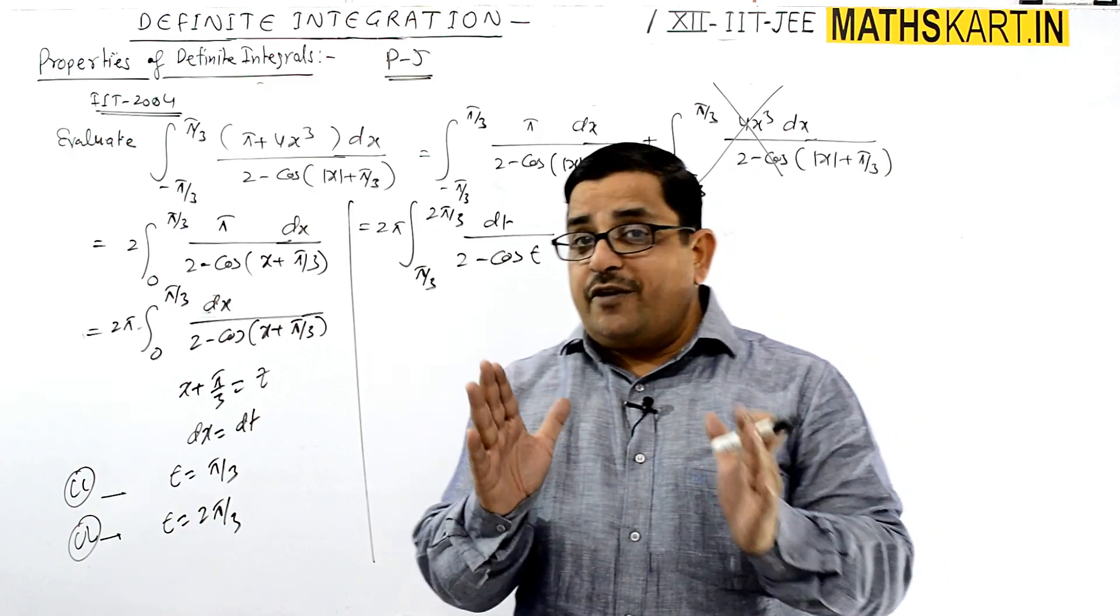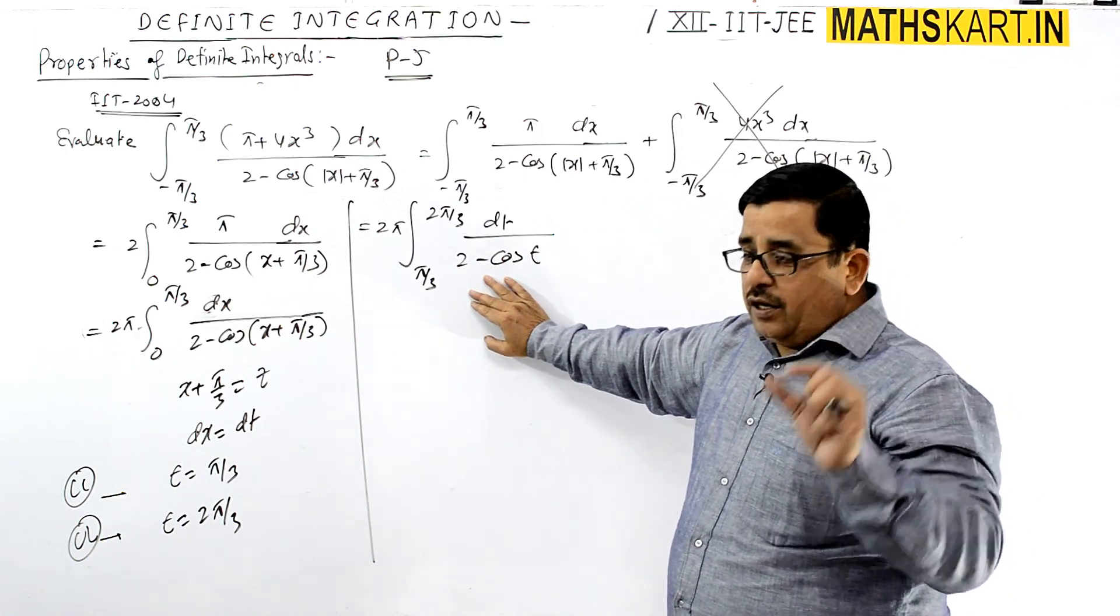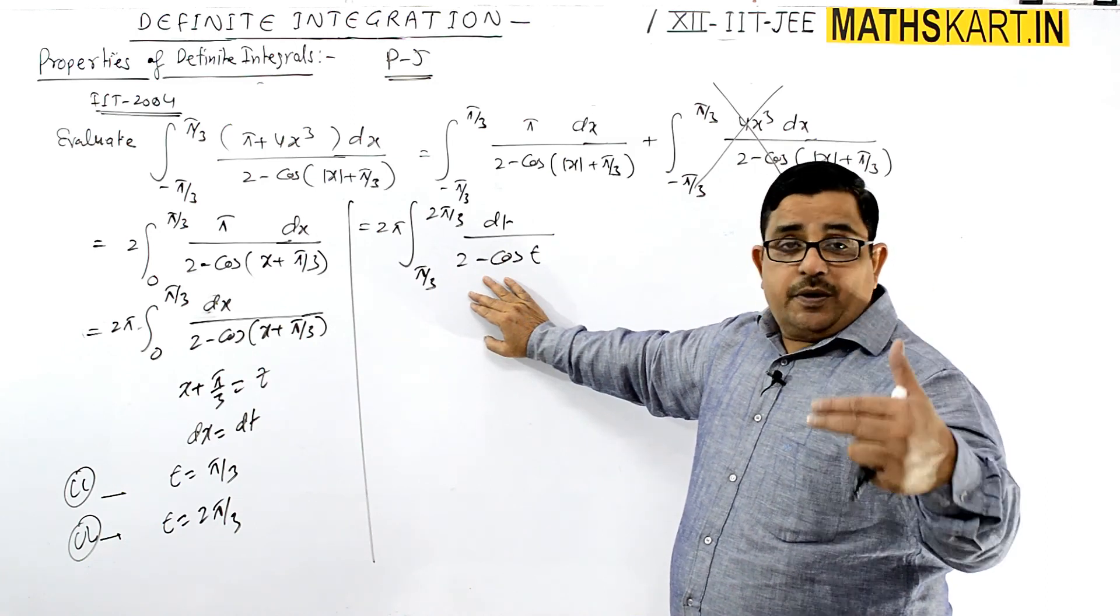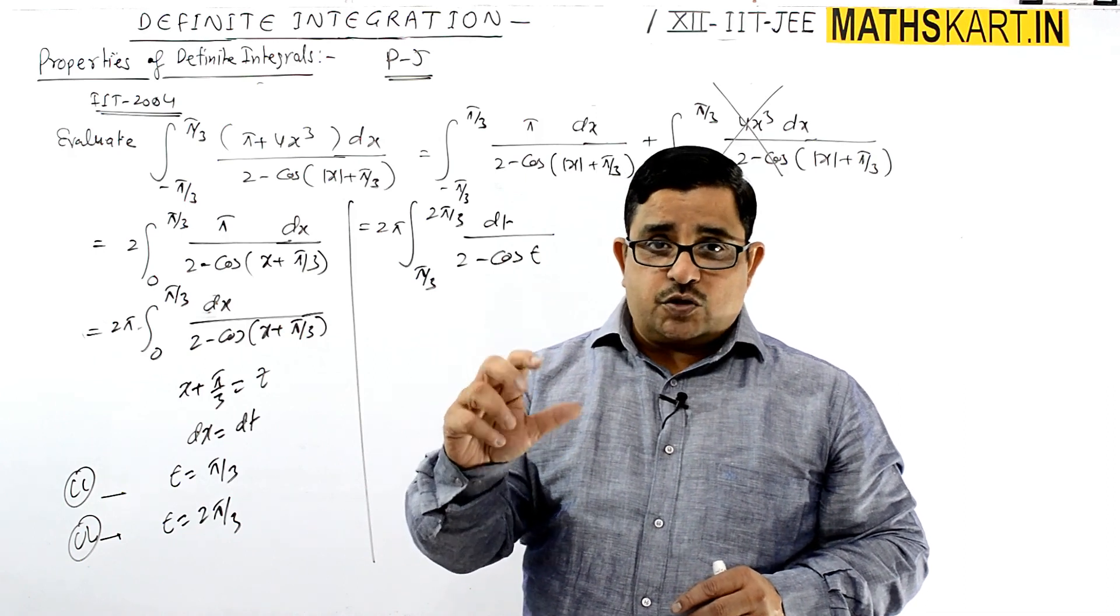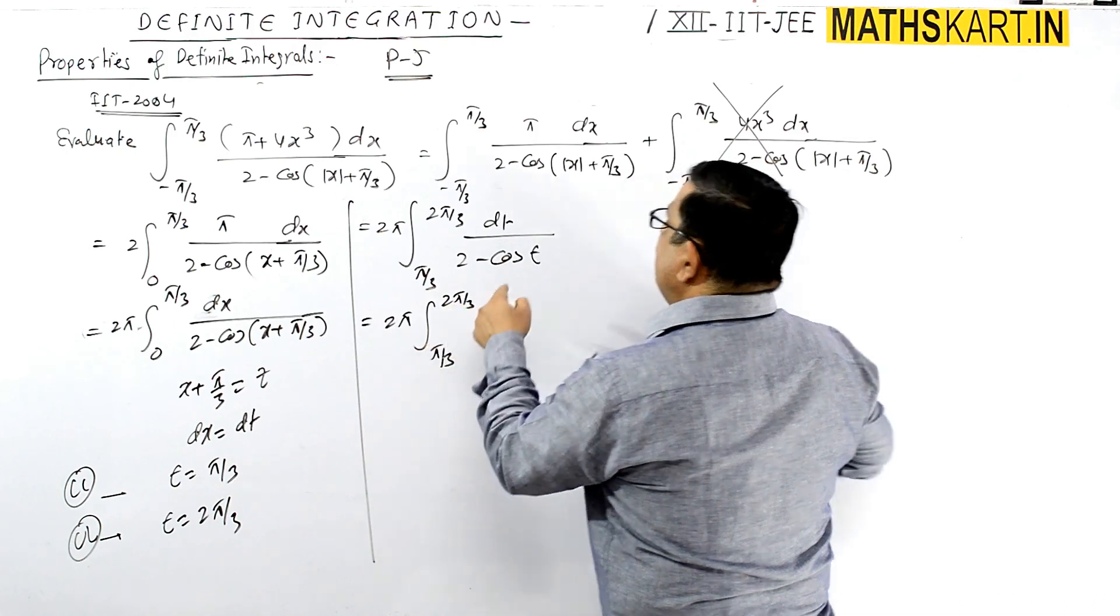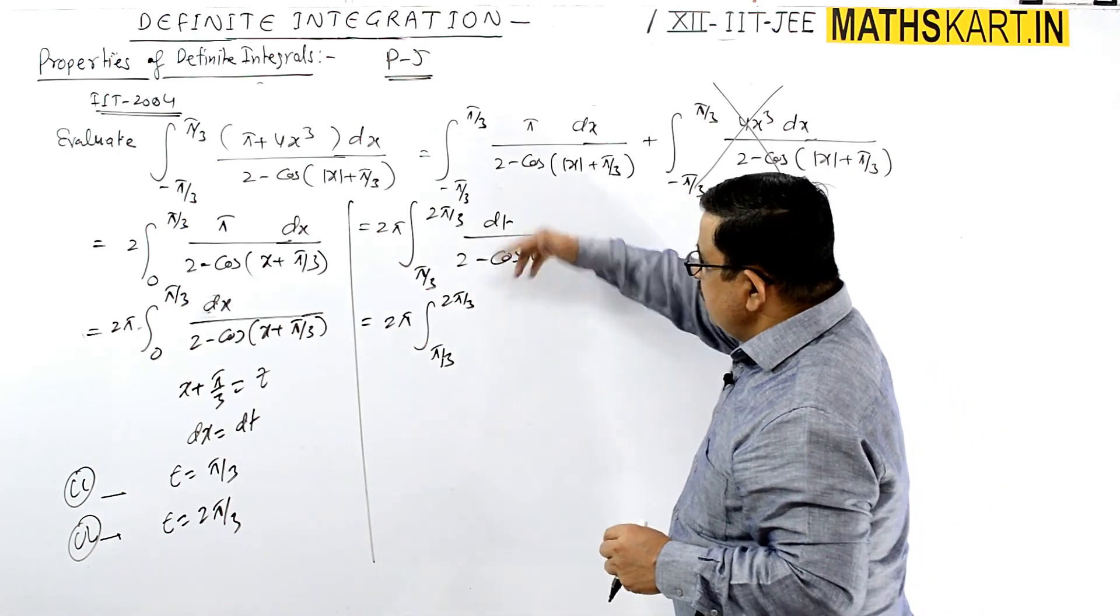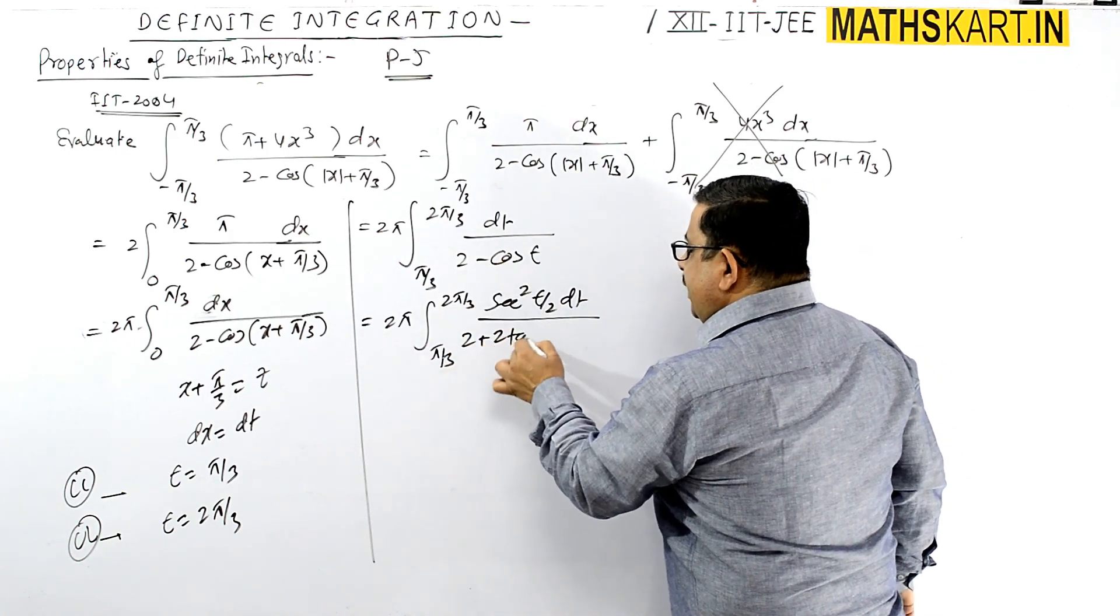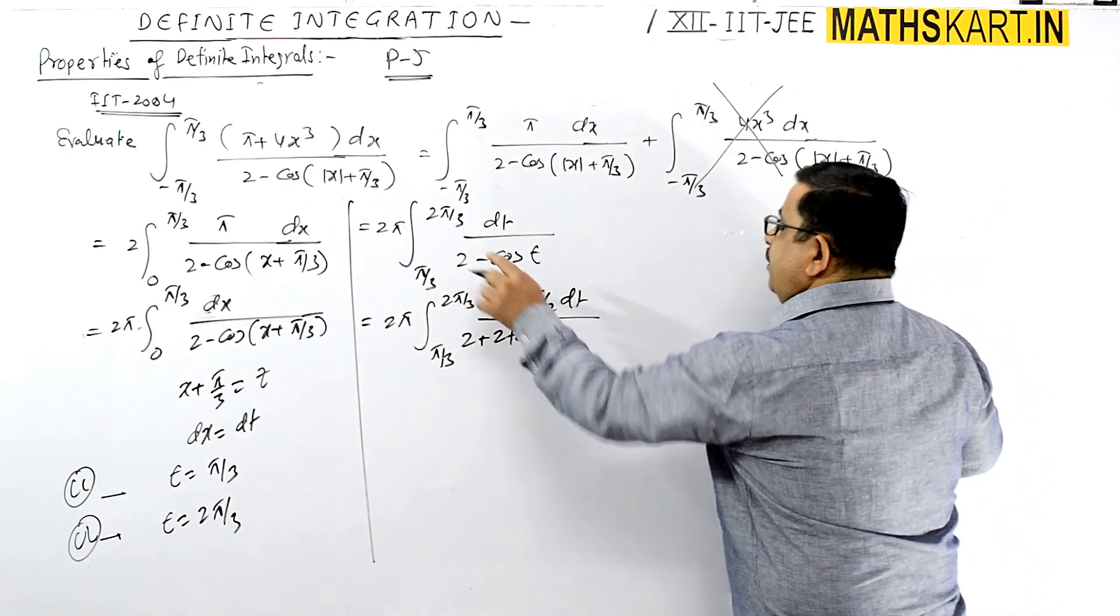The integral becomes 2π from π/3 to 2π/3 of dt/(2 - cos t). When you have integrals with sin x or cos x, convert using half-angle formulas: sin x = 2tan(x/2)/(1 + tan²(x/2)) and cos x = (1 - tan²(x/2))/(1 + tan²(x/2)). Substituting: 2π from π/3 to 2π/3 of sec²(t/2) dt divided by 2(1 + tan²(t/2)) - (1 - tan²(t/2)).